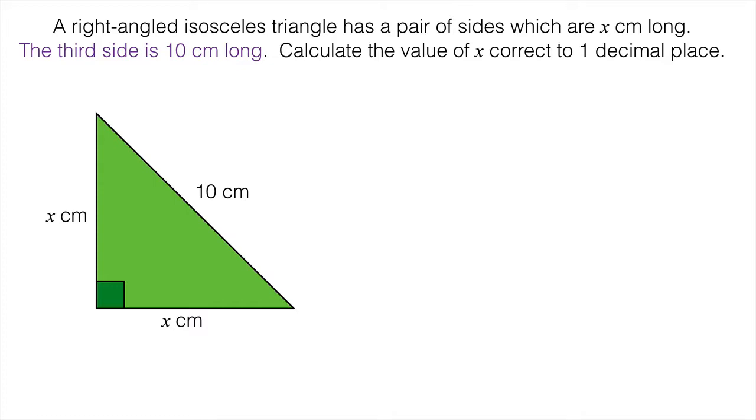Now because this is a right-angled triangle we can use Pythagoras's theorem. So if we look at the two x's, we would have that x² + x² must be equal to the hypotenuse squared, so 10².